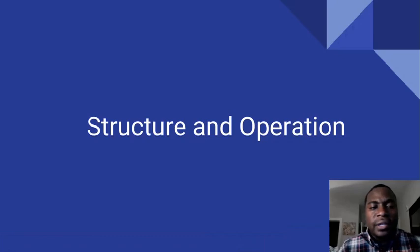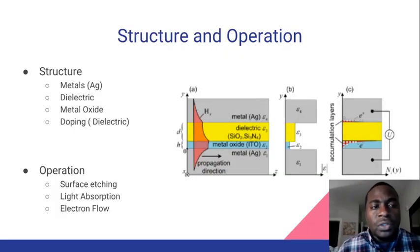Our next section will consist of structure and operation of a plasmonic solar cell. We'll start off with the structure of our plasmonic solar cell. Plasmonic solar cells essentially are constructed of metals, dielectric, metal oxide, and doping as done with the dielectric as well from time to time.